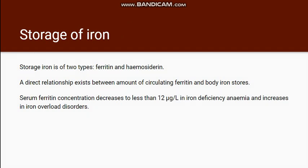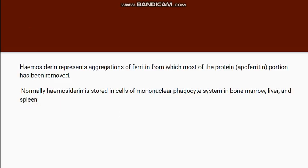Hemosiderin is also ferritin, but one in which the apoferritin part is removed. Hemosiderin is mostly present in the mononuclear phagocyte system — that means in the macrophages which are present in the bone marrow, liver, and spleen.